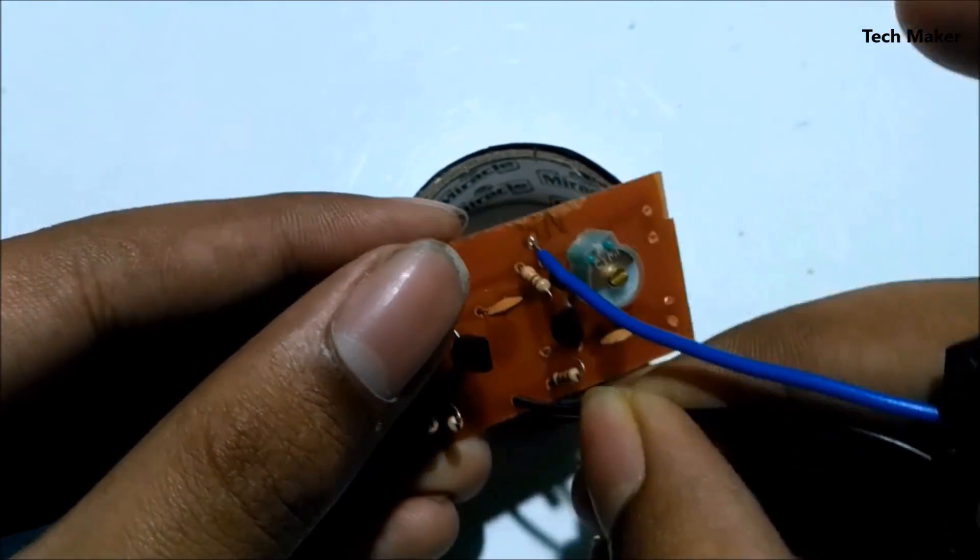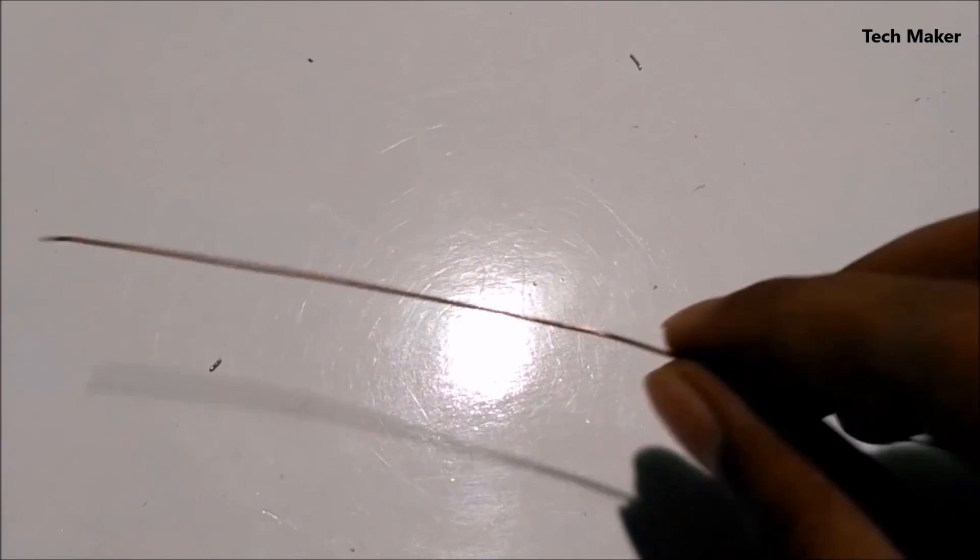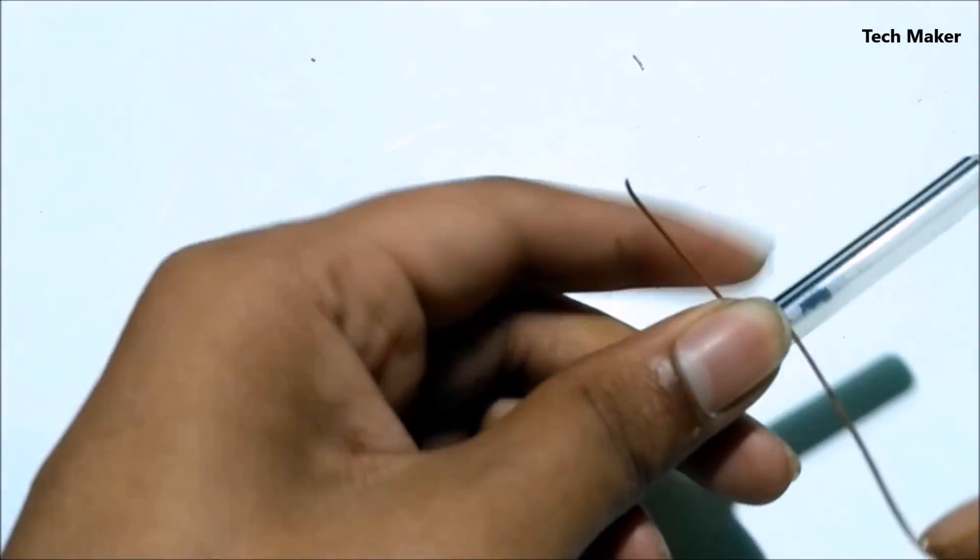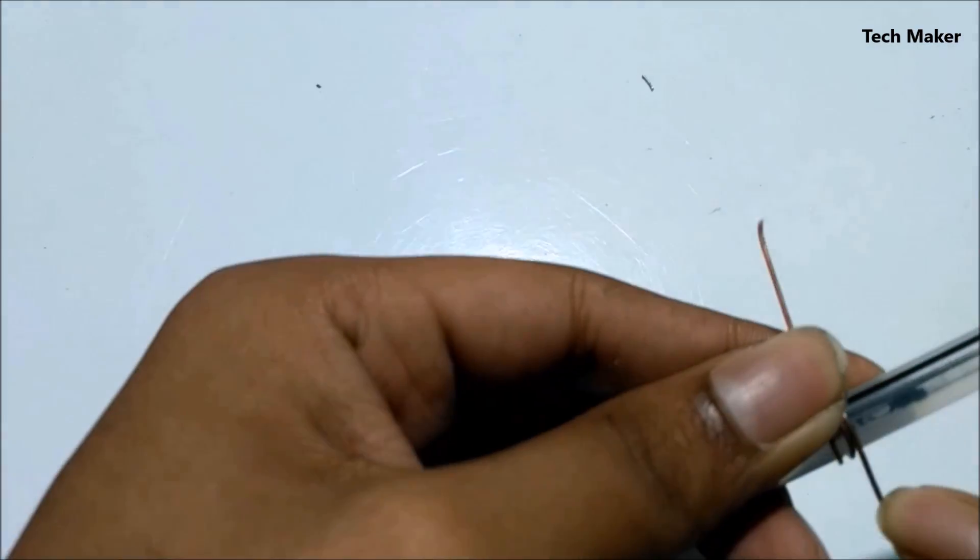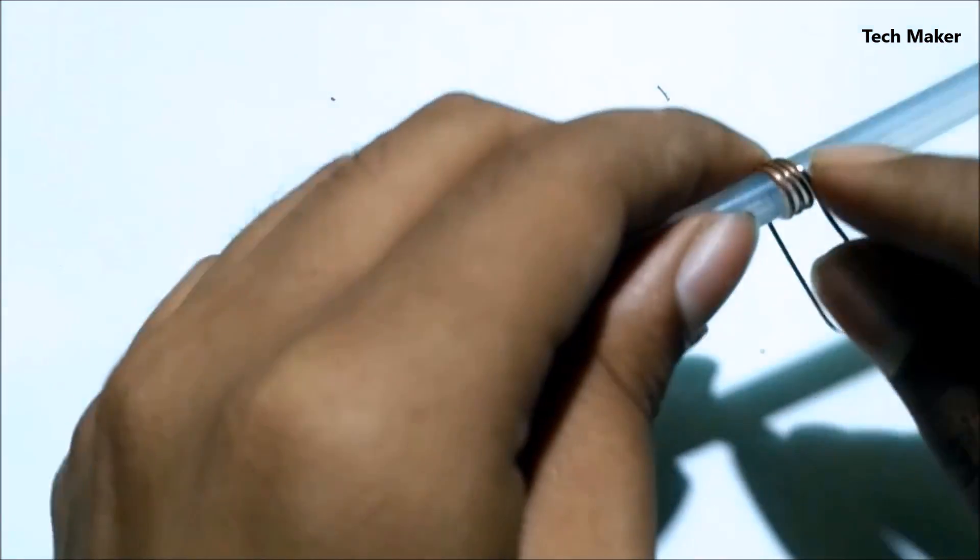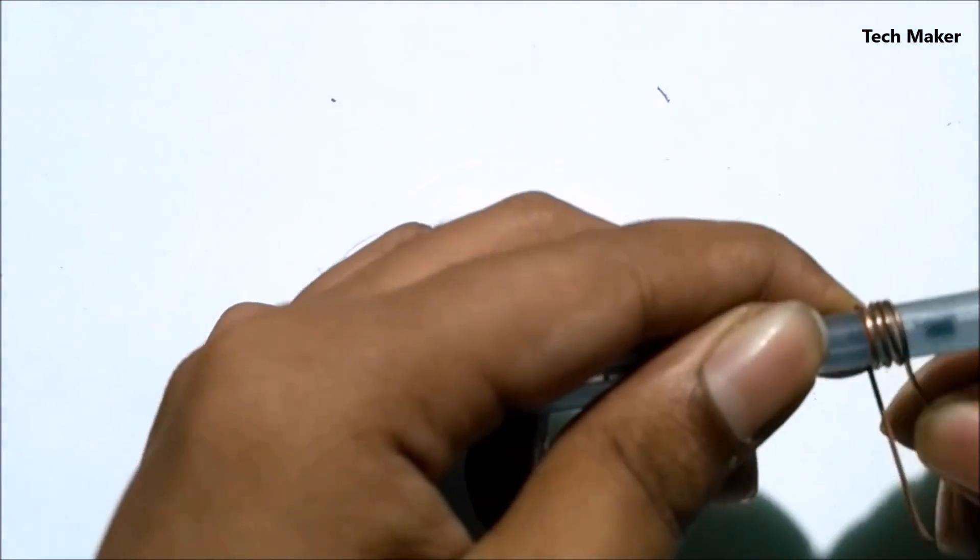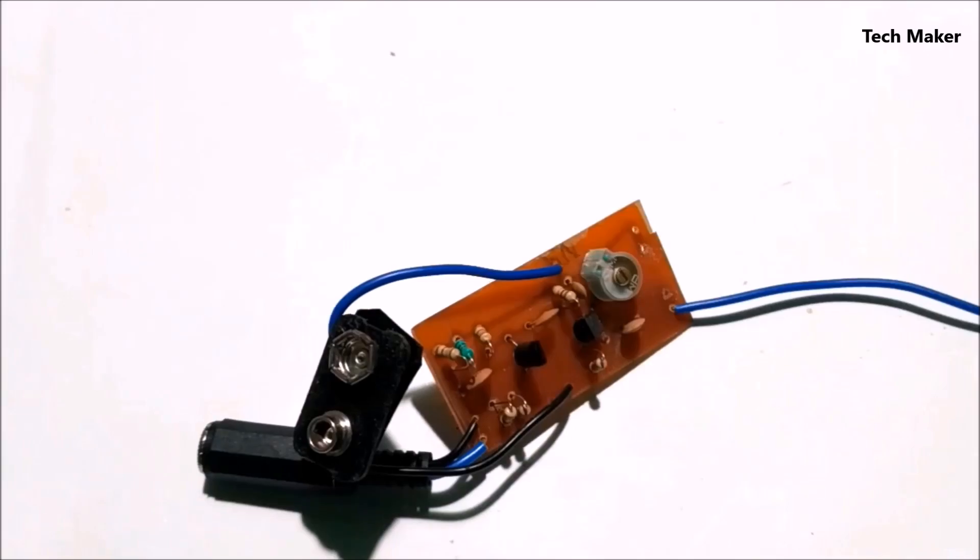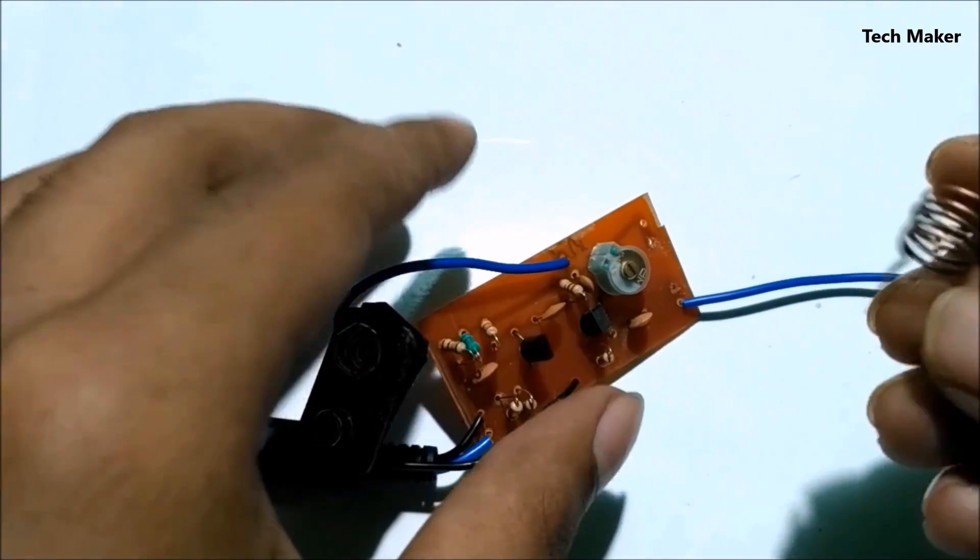Now solder the battery clip. Now the time to make an inductor coil. This is 18 gauge copper wire. Make a coil of 5 turns with a diameter of 1/4 inch. This is the inductor, how it looks like.